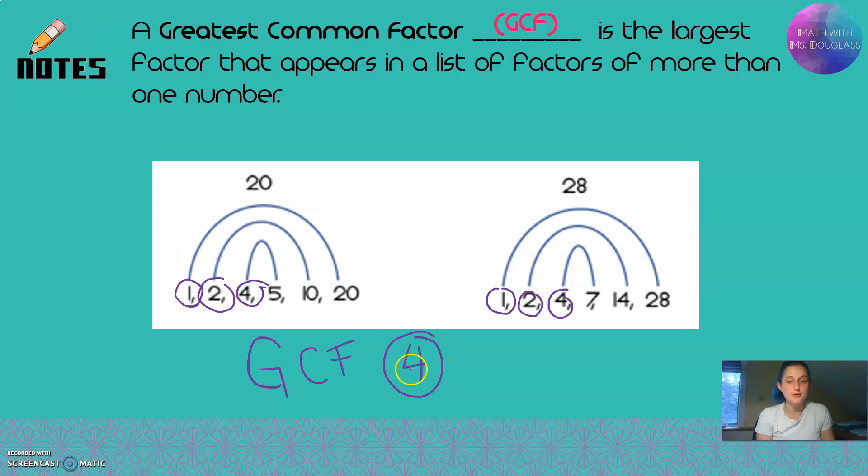A super common mistake that people make is they think, what's the biggest number in these lists? And they're like, oh 28, that's the biggest number in either list. But it has to be the biggest number that you see in both lists. That's how you find the greatest common factor.